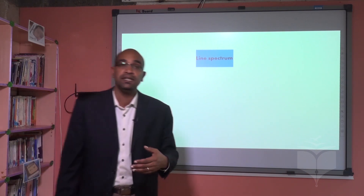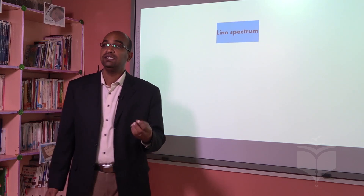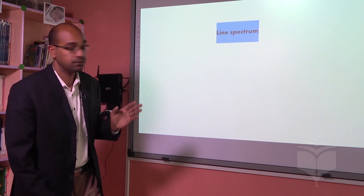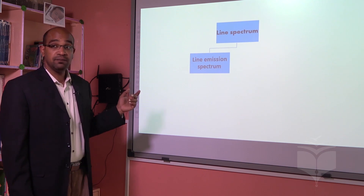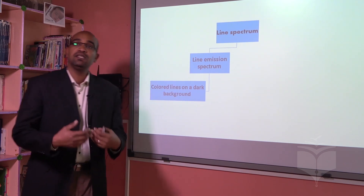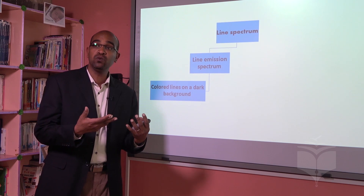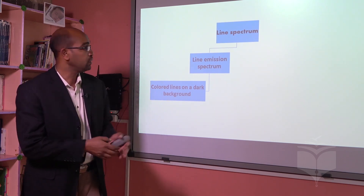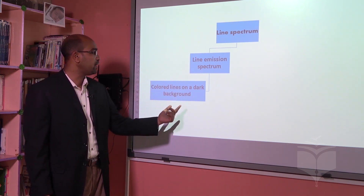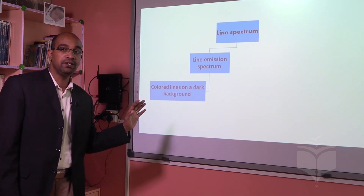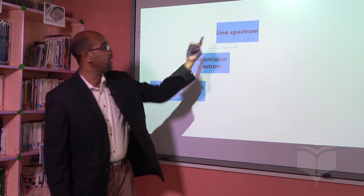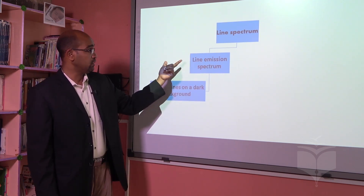As we explained before, line spectrum means a spectrum that contains limited wavelengths — we cannot find all kinds of radiations in it. Line spectrum itself is also divided into two types. The first is line emission spectrum, which is emitted by chemical elements when they get excited. It appears as colored lines on a dark background.